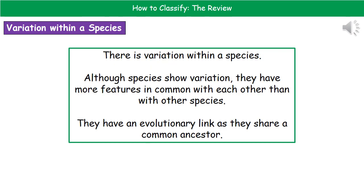Within an individual species there is variation, but even with that variation, members still have more features in common with each other than with another species — that's why they're still within that one species. They also share an evolutionary link because they share a common ancestor.